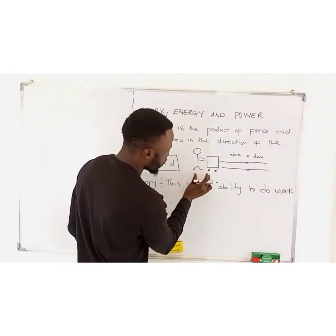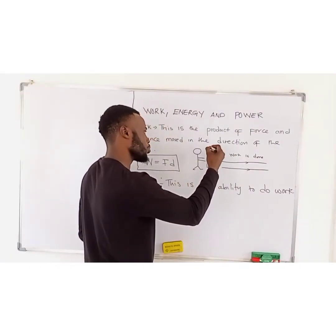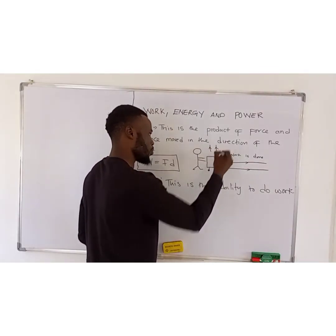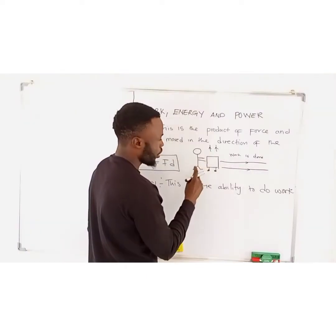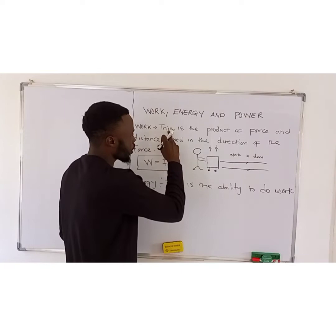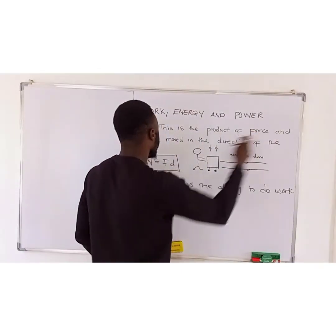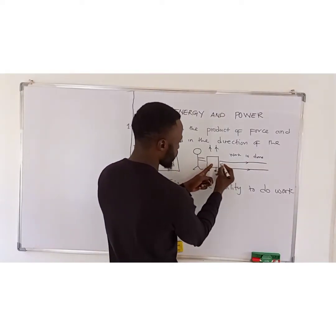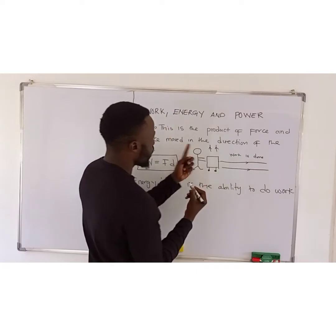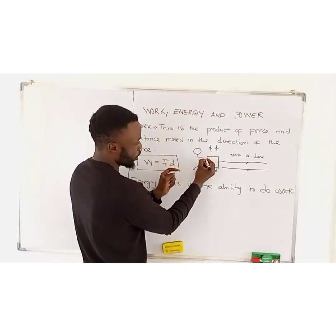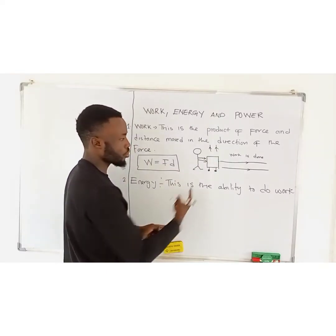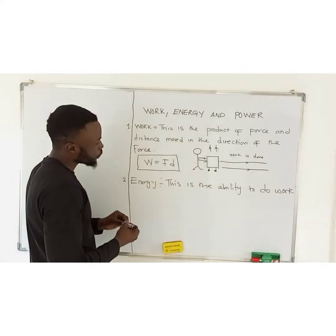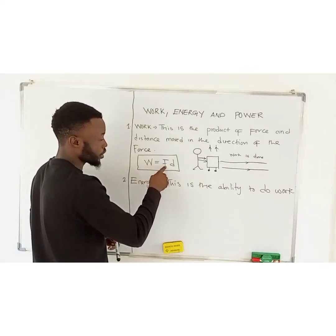Now, in a case where this guy is pushing the trolley and the trolley decides to go upwards, no work is done. Work is only done when the distance moved is in the direction of the force — the force is pointing straight, so the object has to go in the same direction. So, work is equal to force times distance.